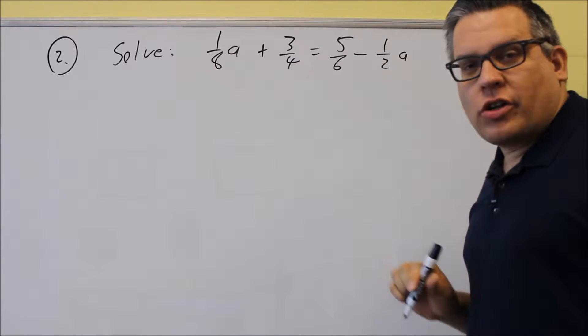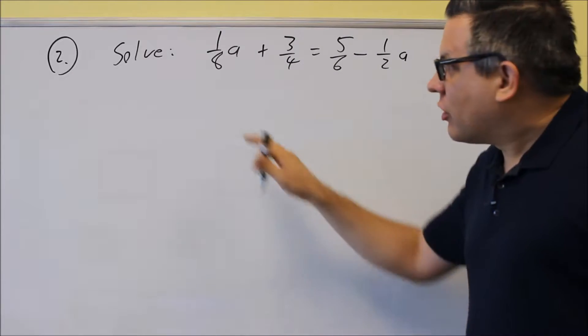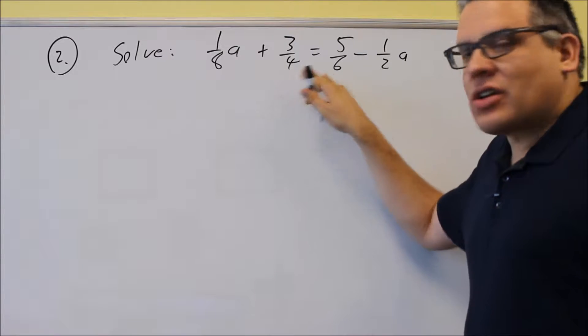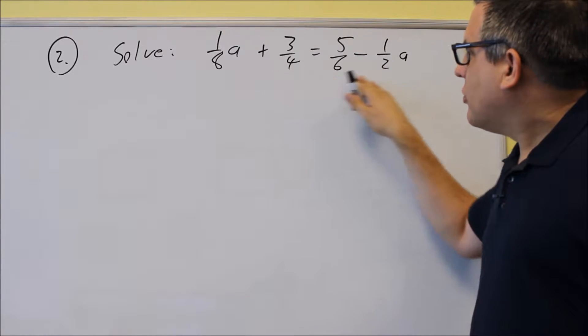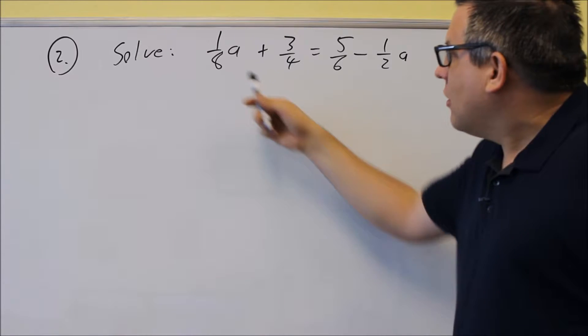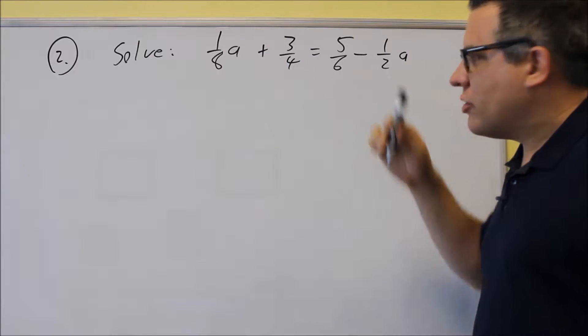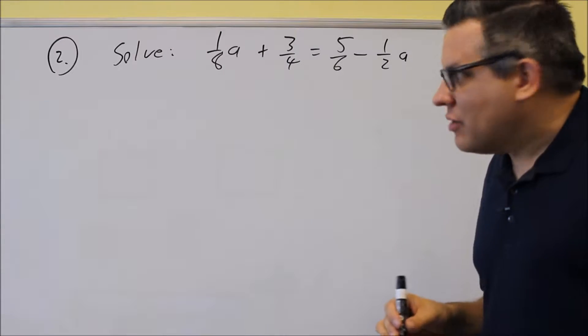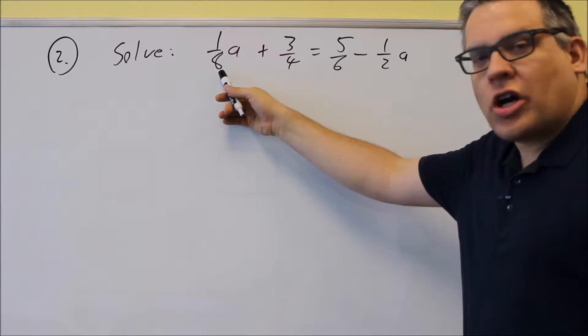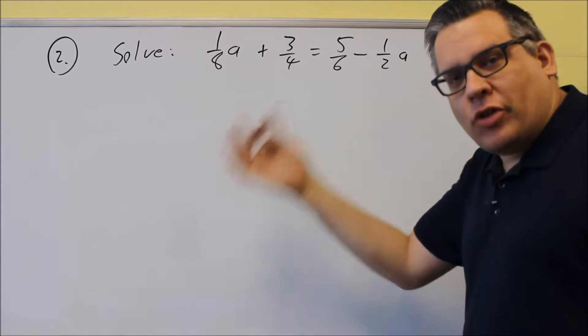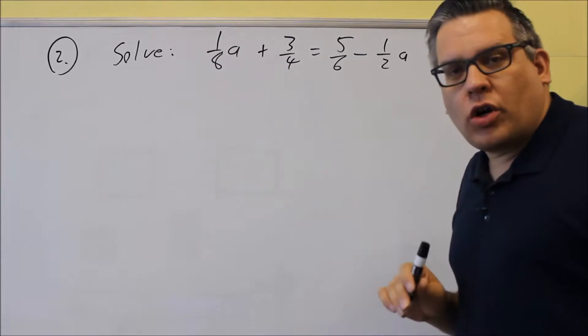What you want to do, the best way to take care of these, is you want to look for the least common multiple of these numbers you see on the bottom. We've got an eight, a four, a six, and a two. If you're not sure what that is,